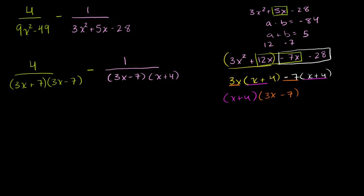So let's figure out what our common denominator is. Our common denominator needs to have all the factors of this guy right here. So it needs to have a 3x plus 7, it needs to have a 3x minus 7. And it also has to have all the factors of this guy. Well, it already has a 3x minus 7, but it doesn't have an x plus 4 in it yet. So now you have to multiply it by x plus 4.